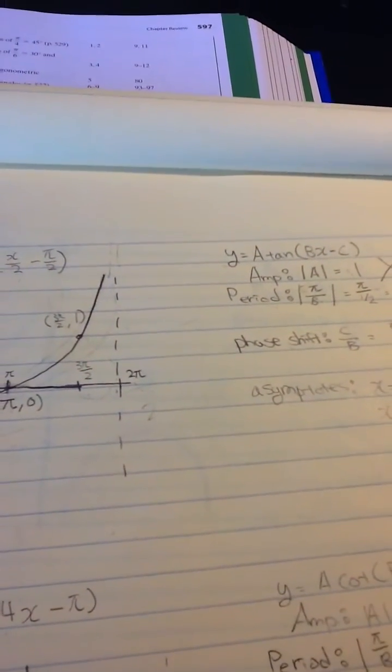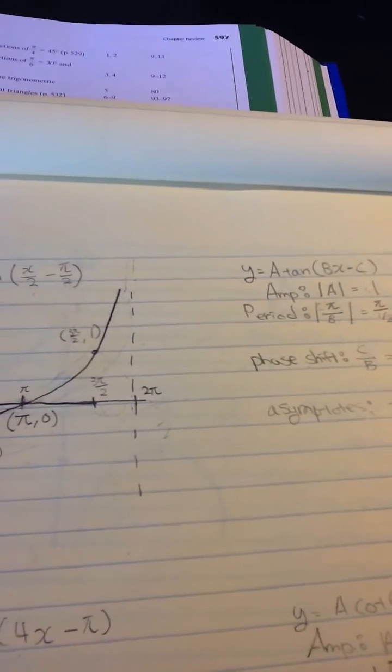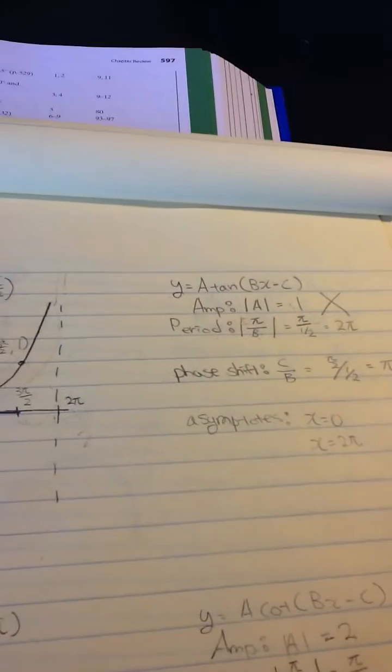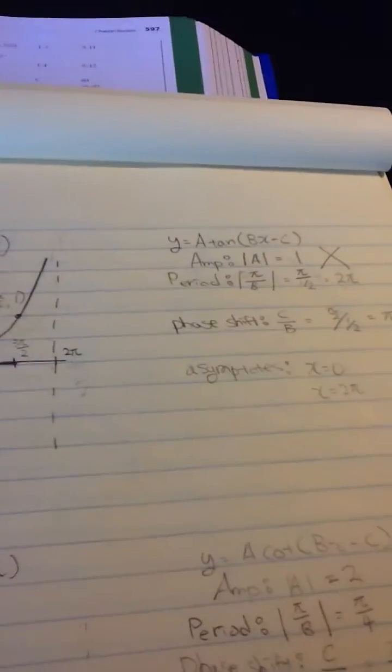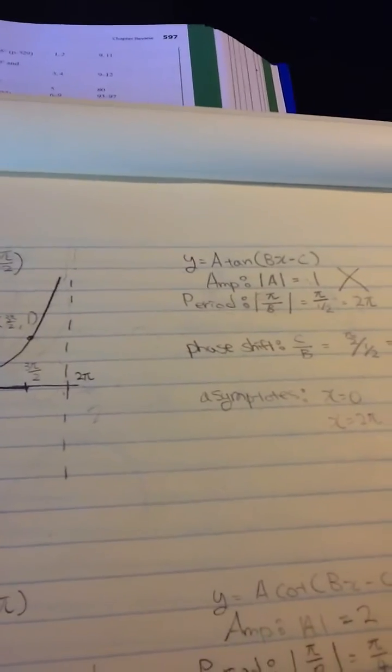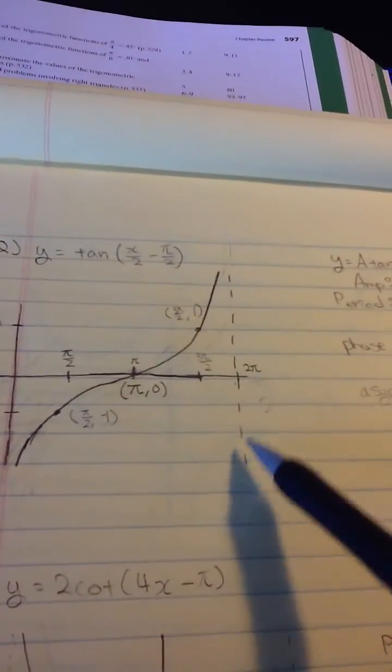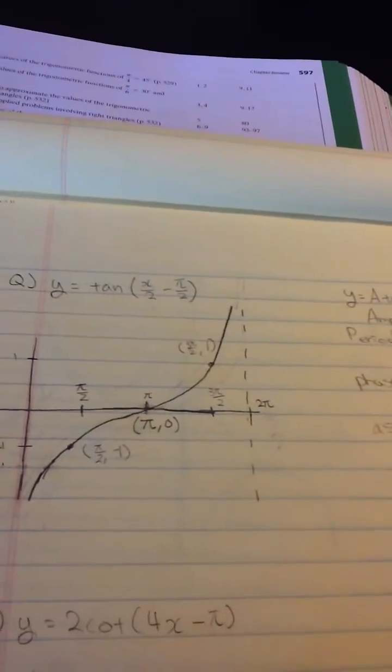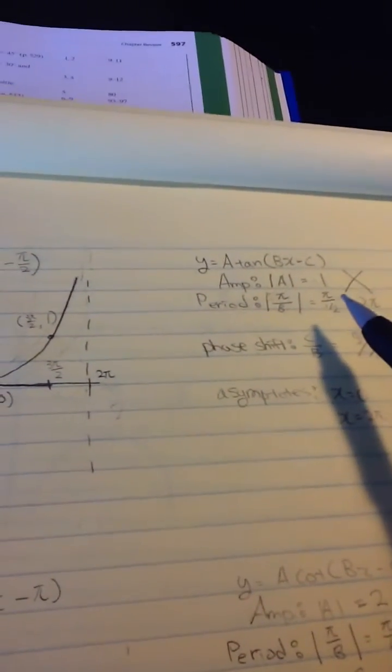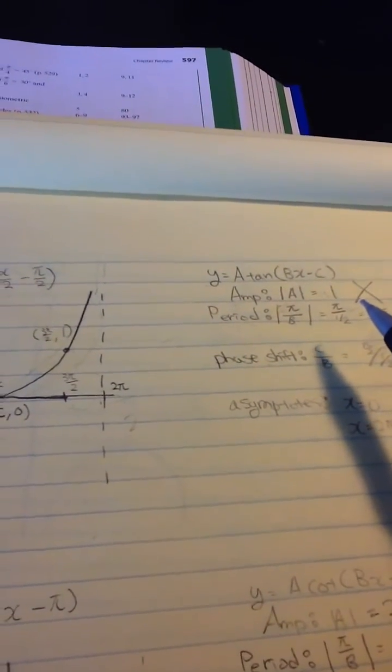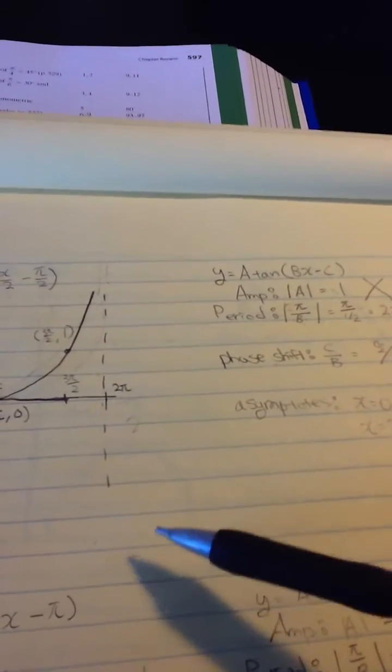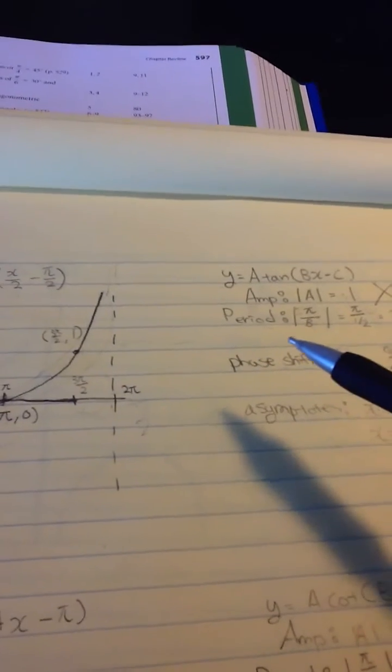I'm going to find period, phase shift, and asymptotes by using y equals a tangent of bx minus c. Tangent doesn't have amplitude because the graph goes to infinity for maximum and infinity to minimums, but I'm still going to get a number for the amplitude to help me find a point in the x-coordinates.